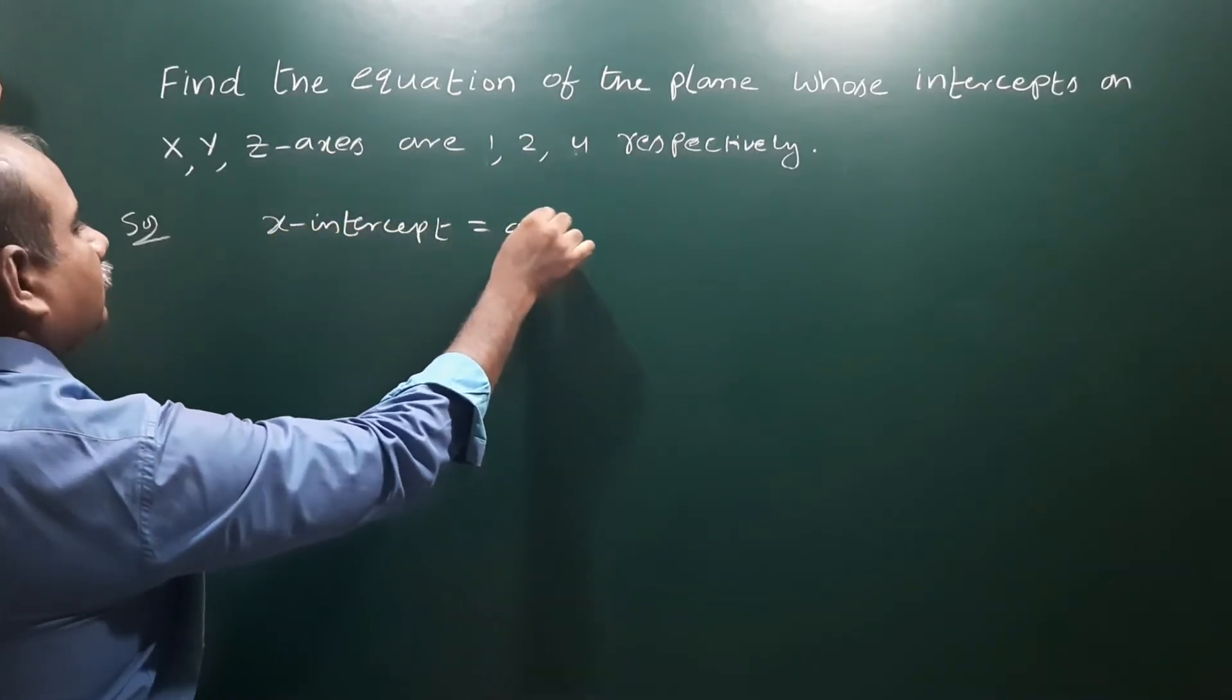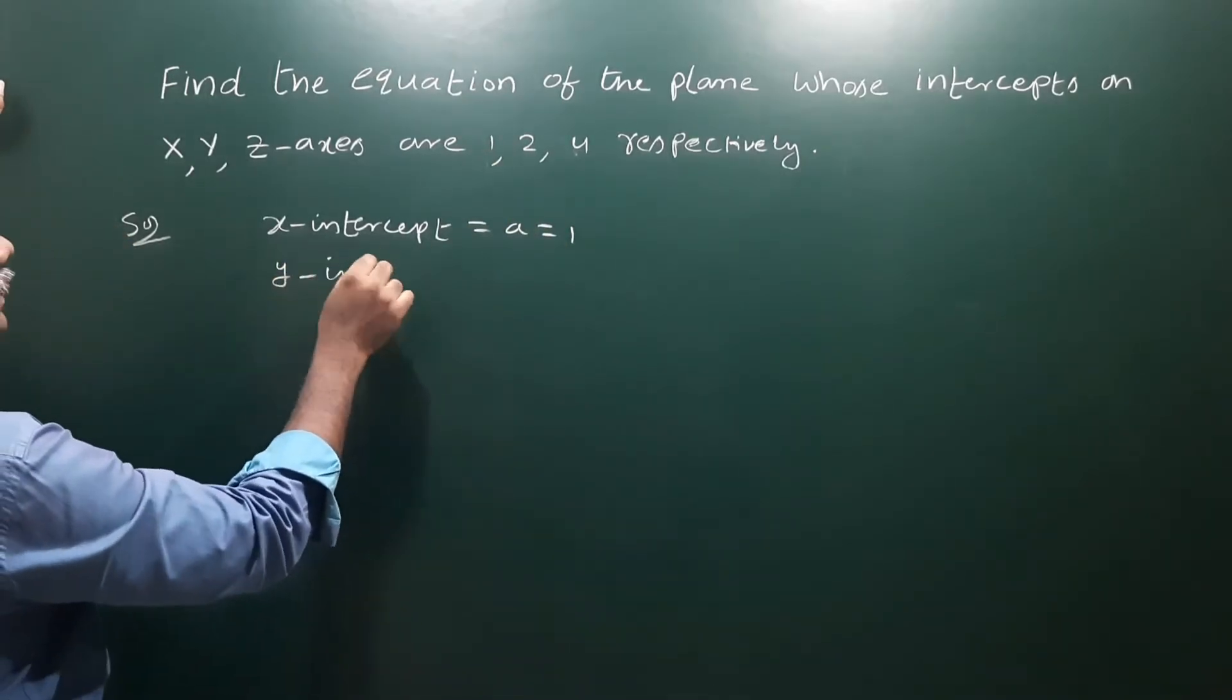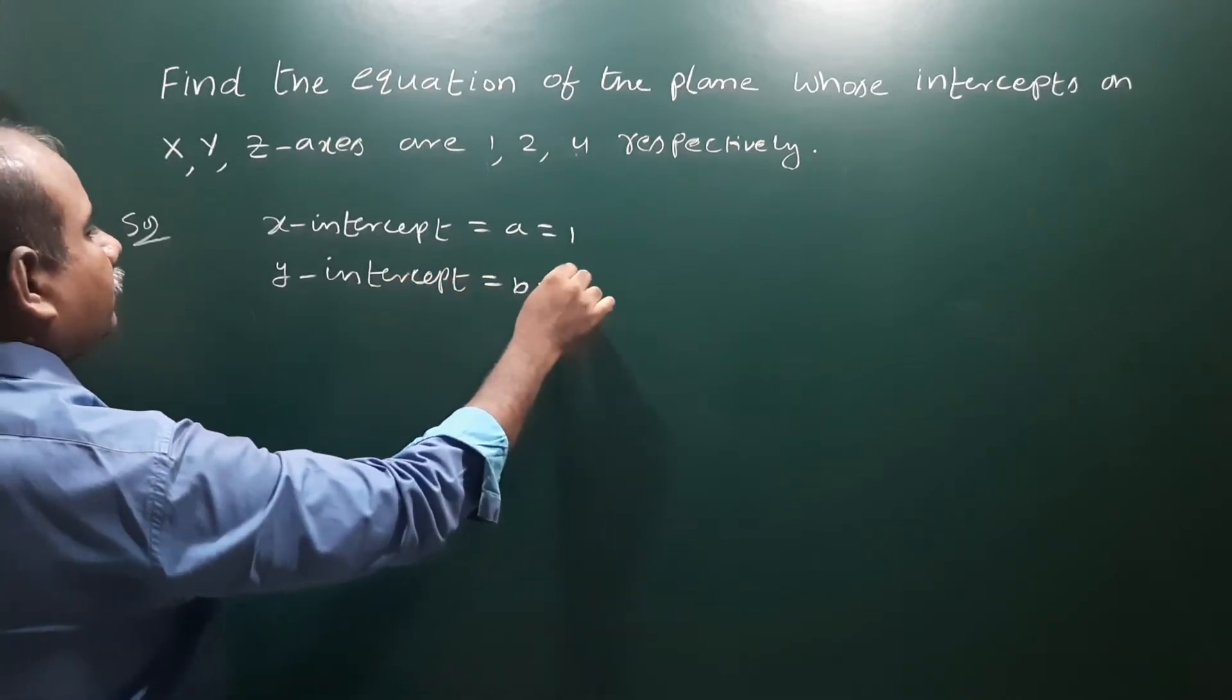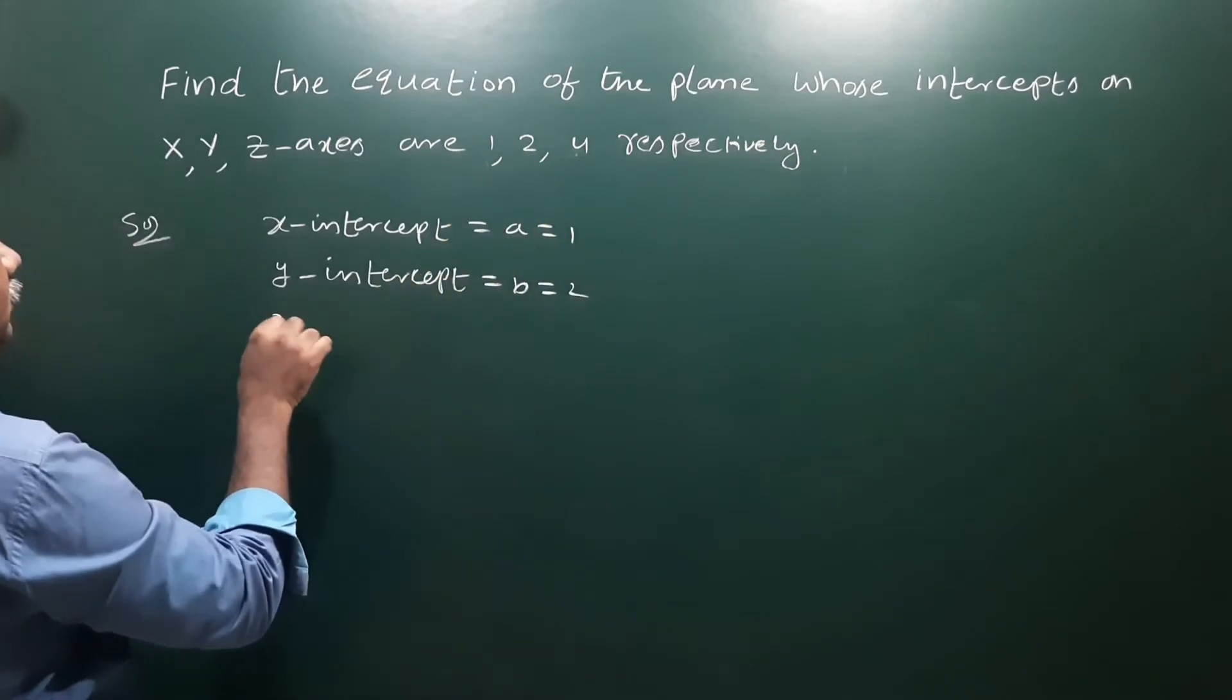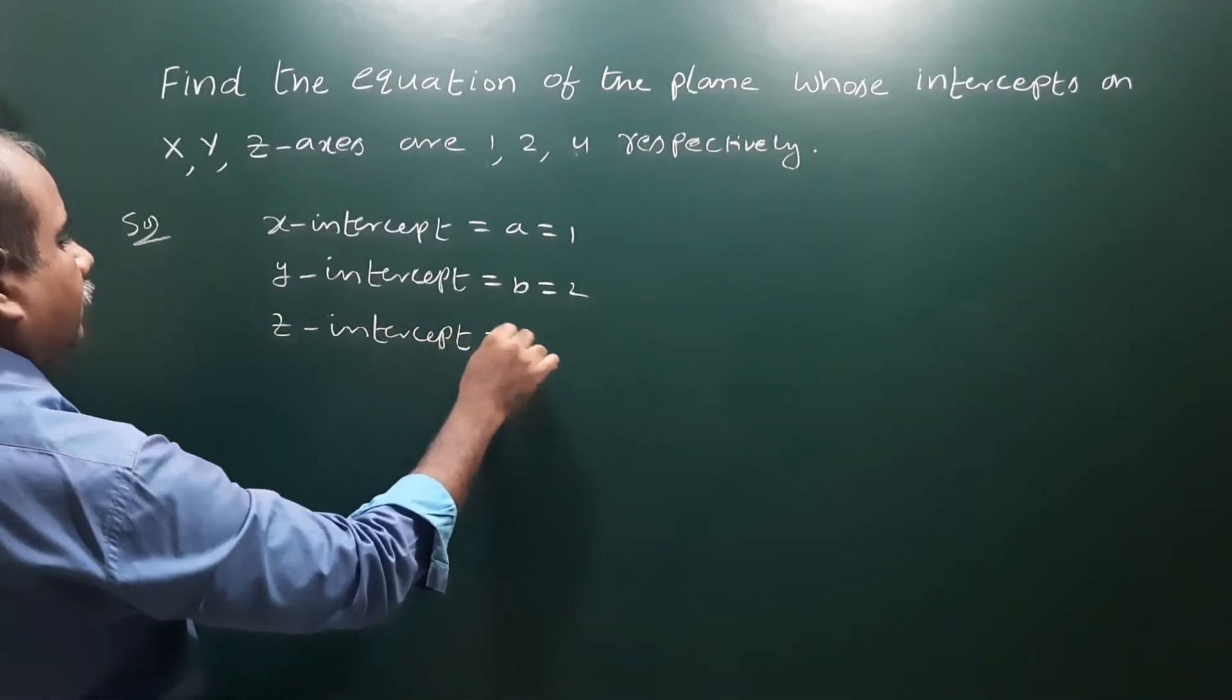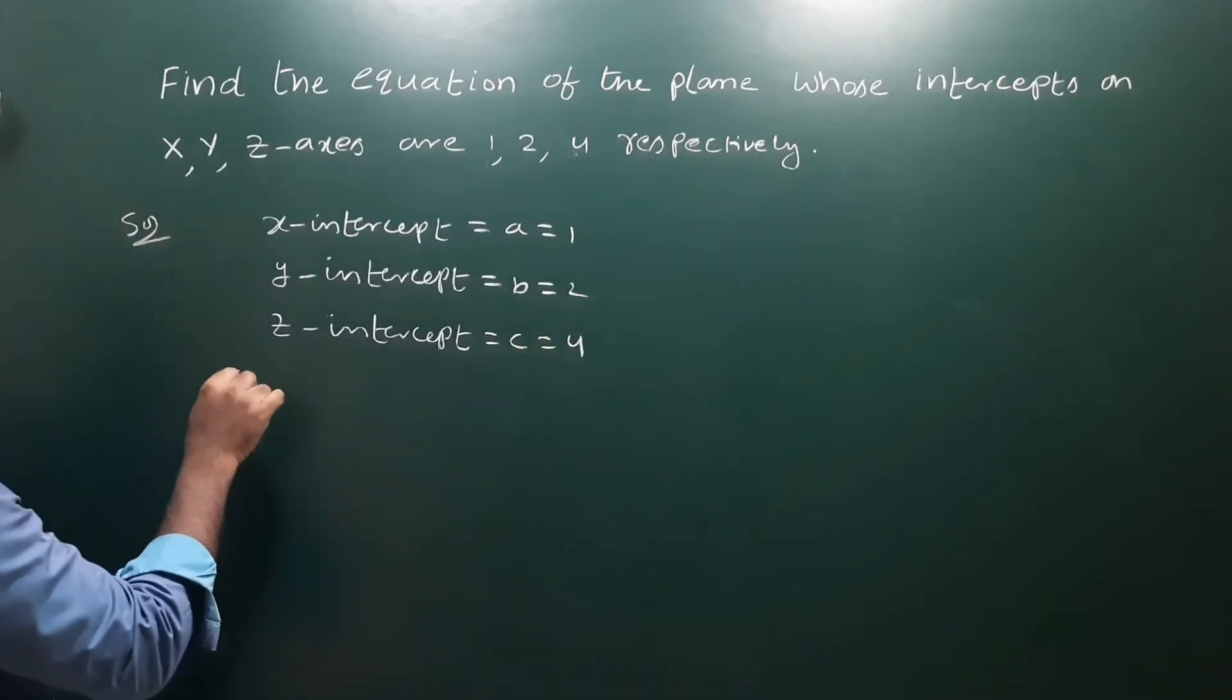The x intercept, that is equal to a, is equal to 1. The second one is the y intercept, b is equal to 2. The z intercept, c is equal to 4. Now we'll use the intercept form of the plane.